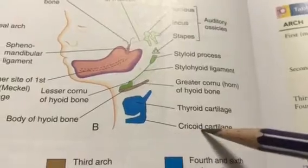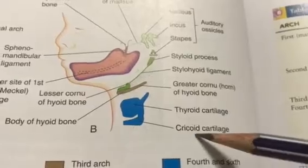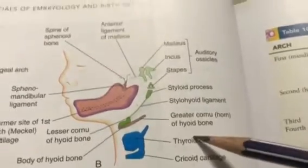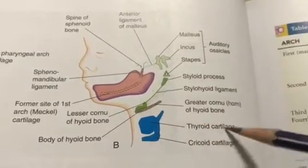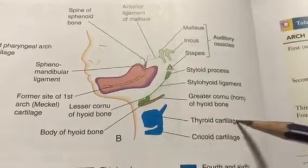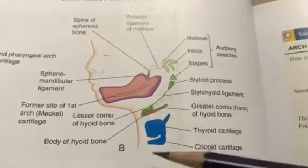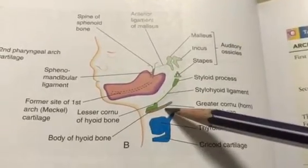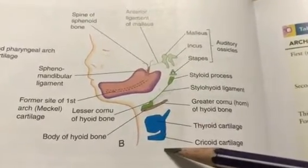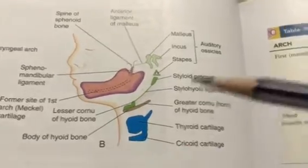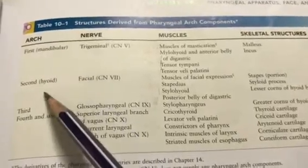Then moving to the fourth and sixth arches: the fourth arch gives the thyroid cartilage, and the sixth arch gives the cricoid cartilage. These are the cartilages of the larynx. In some books, the thyroid cartilage and epiglottis are derived from neural crest cells and the cricoid cartilage from mesoderm. For the fourth arch the nerve is the superior laryngeal nerve, and for the sixth arch it is the recurrent laryngeal nerve — both branches of the vagus nerve.